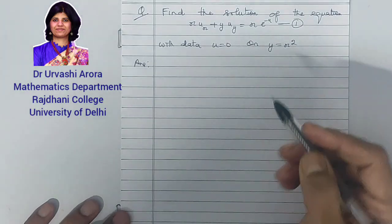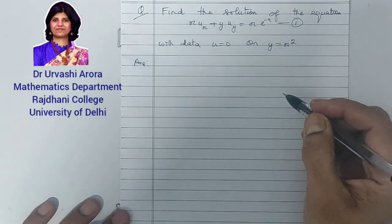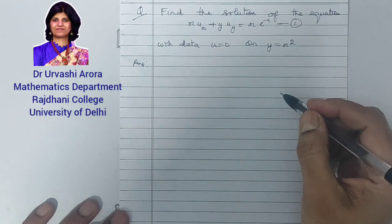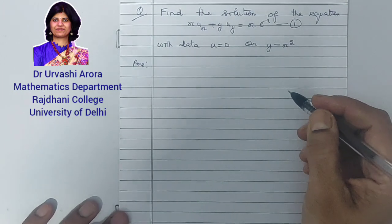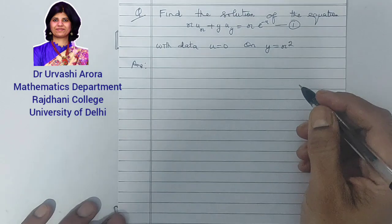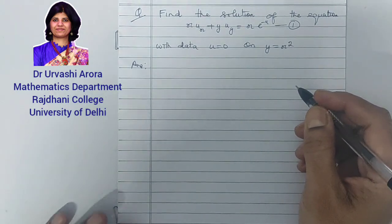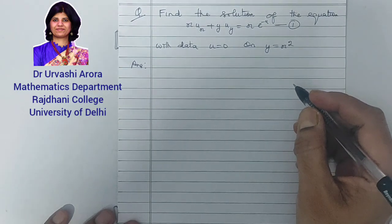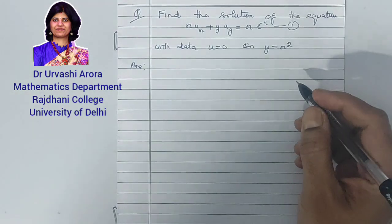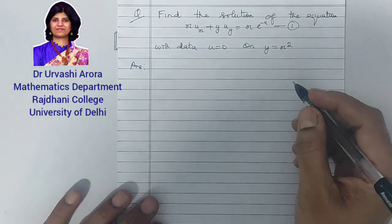Hello students. In this video lecture, I am going to discuss a problem based on the Cauchy problem for a first order quasi-linear partial differential equation. In my earlier video, I have already discussed the theory behind the Cauchy problem for a first order quasi-linear partial differential equation. In this particular video, I am going to discuss a problem related to that.